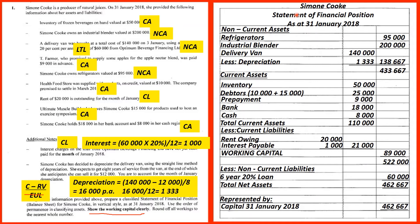Write the heading: Simone Cook — Statement of Financial Position as at 31st January 2018. List the non-current assets in the order of permanence — so perhaps refrigerators are more permanent than a van or industrial blender. Current assets are also listed in descending order of permanence. Then fill in the amounts for each item.